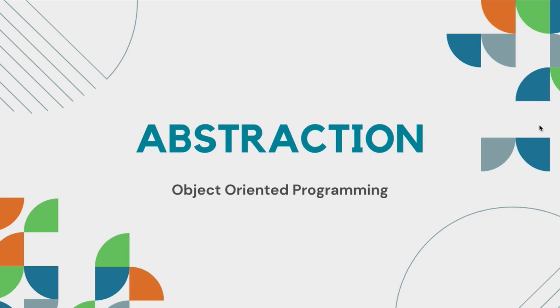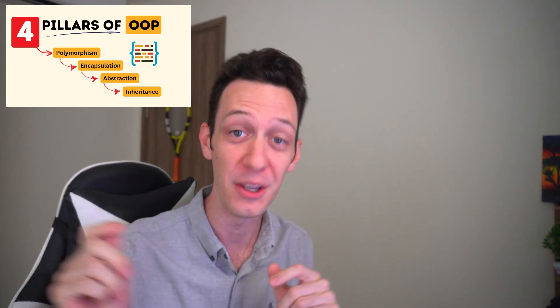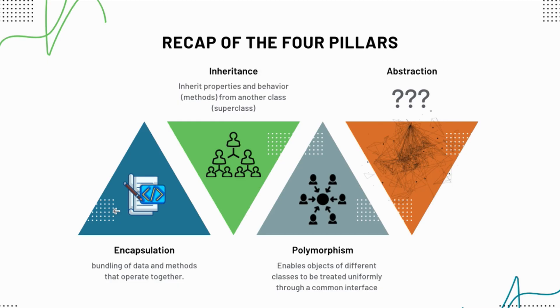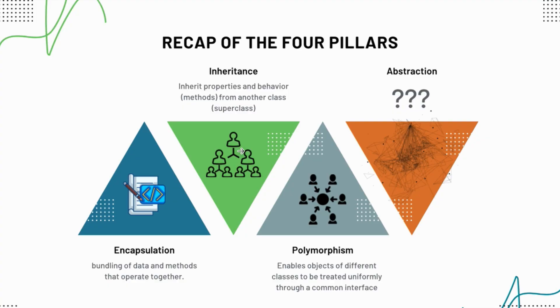Let's recap the four pillars of OOP. The first was encapsulation — bundling data together, holding methods and properties. Think of a cookie jar holding a bunch of cookies. Then we moved on to inheritance, where we can inherit all the properties and methods of an existing class and pass them into a subclass — think of the parent class and the child as the subclass.